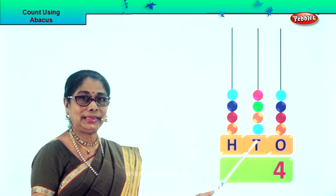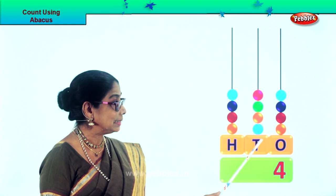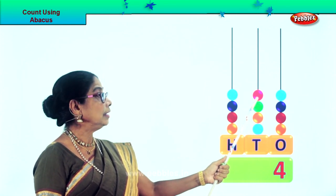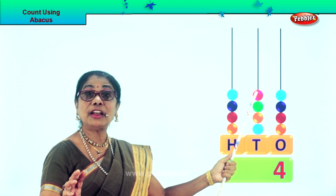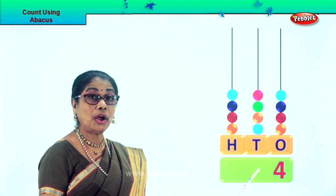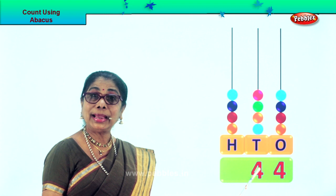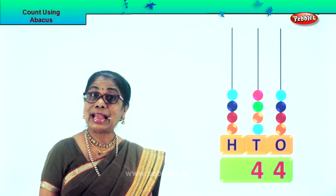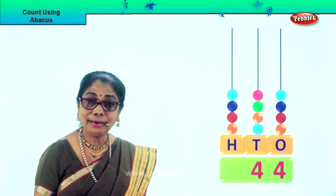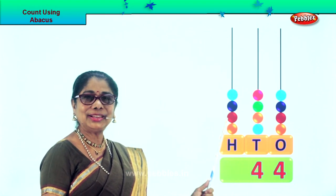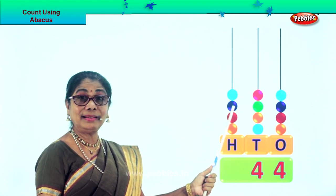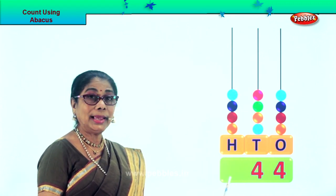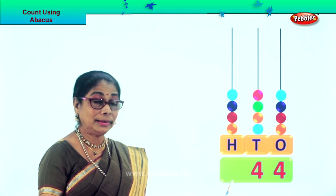Let's go to the 10s place. Count in 10s: 10, 20, 30, 40 — each 40. So we put down 4 in the 10s place. Now we put down 4 in the 100s place — 400.